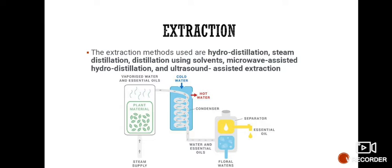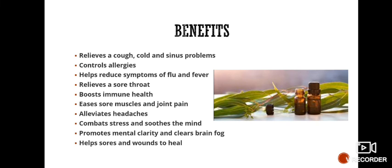Extraction of eucalyptus oil: The extraction methods used are hydro distillation, steam distillation, distillation using solvents, microwave-assisted hydro distillation, and ultrasound-assisted extraction.